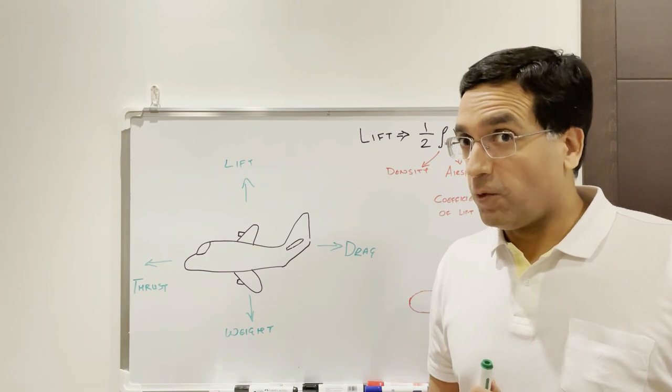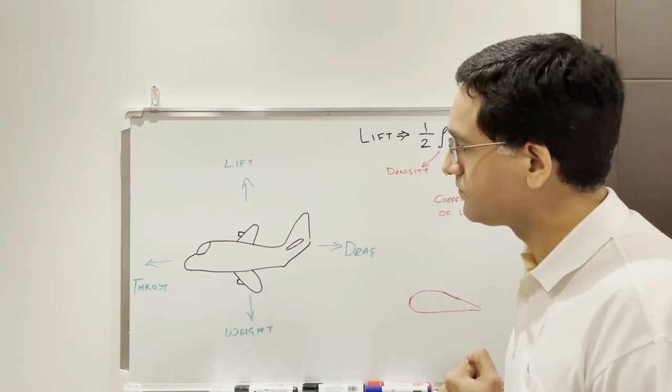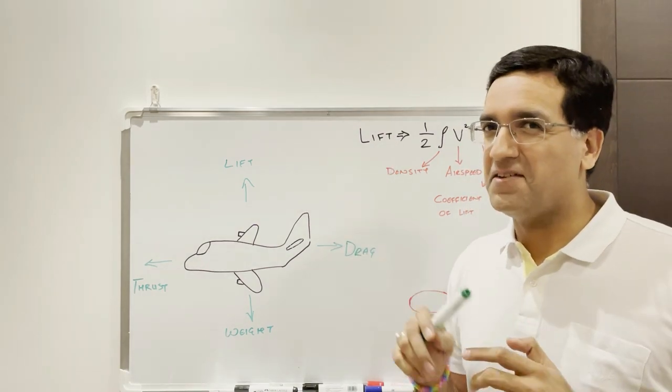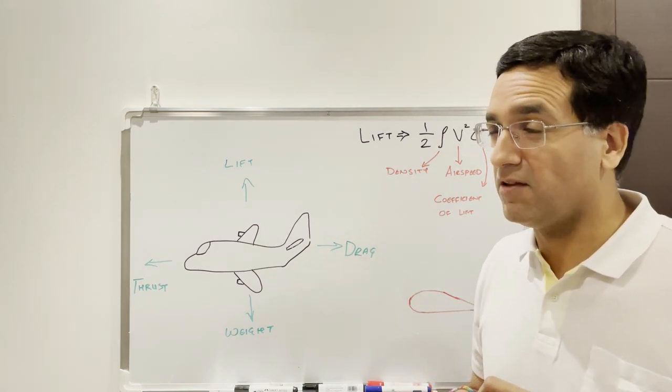Right, so those are the primary four forces that act on an aircraft at any given point in flight. That's the formula for lift. It looks complicated, actually it's not. Let's just break it down and we'll again try and keep it as simple as possible.